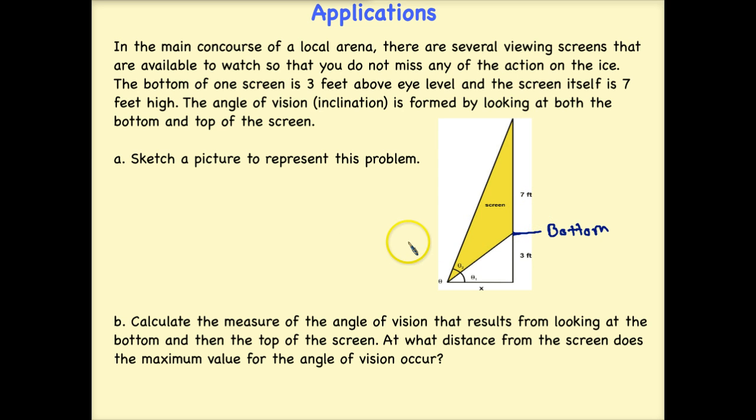The angle of vision is formed by looking at both the bottom and top of the screen. So that's this theta sub 2 right here. It's not the entire angle, because that would be assuming that I looked from all the way down here at the ground to the top. But this problem says that the angle of inclination is formed by looking at both the bottom and top of the screen. So here's my image. Notice that I've labeled this distance from where I'm sitting to the actual height of the screen here, all the way down to the ground, as x. I've labeled each of my sections according to what the problem said.